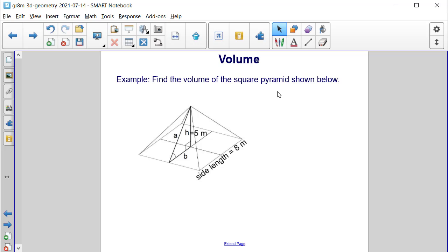Find the volume of the square pyramid shown below. We have our square pyramid. It tells us our height is 5 meters. And our side length for every side of the base in the square pyramid is 8 meters.